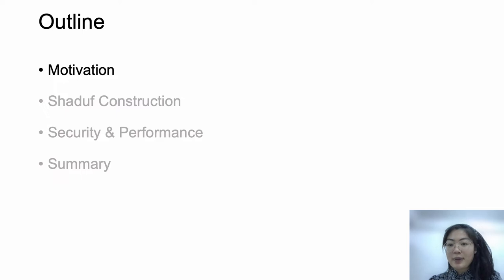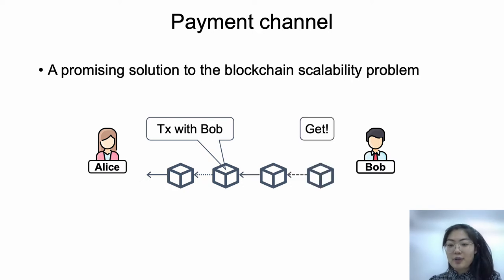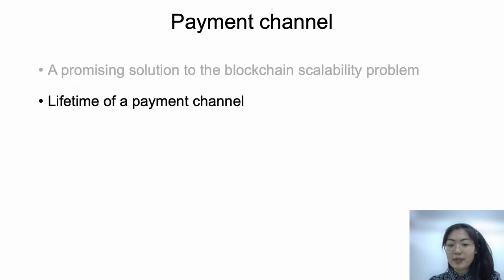Let's start with the motivation of the work. The payment channel is a promising solution to the blockchain scalability problem. In the blockchain, transactions are broadcast by users in the underlying network and included in new blocks by the blockchain miners. The transaction is confirmed when the block is confirmed. The blockchain's transaction throughput is limited, and Bitcoin can only process around 7 transactions per second. The payment channel solves the problem by allowing users to perform payments without recording them on the blockchain, also called off-chain payments.